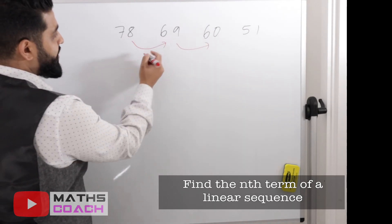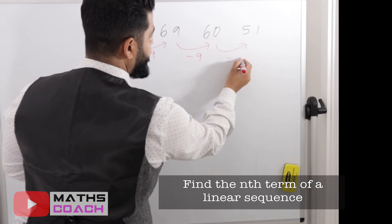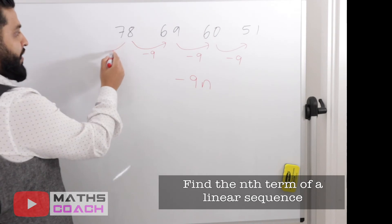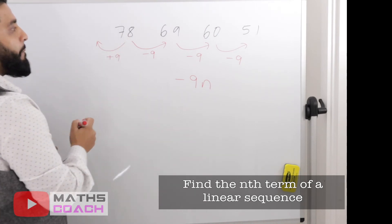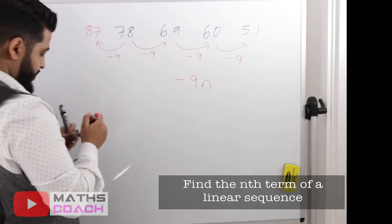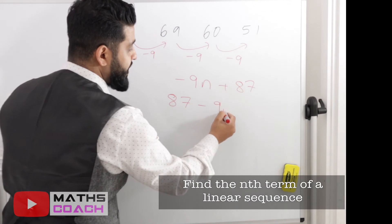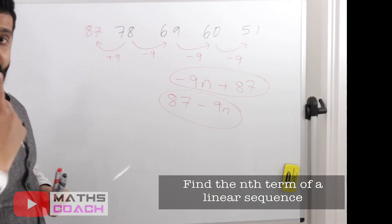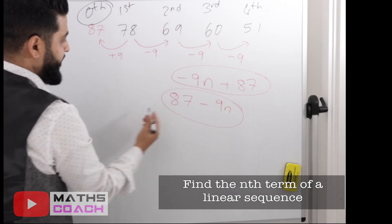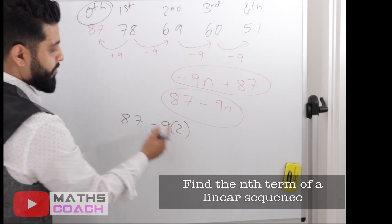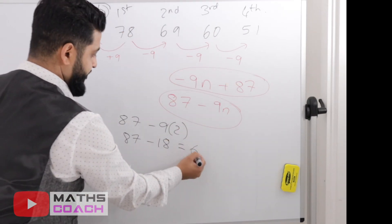In this example the sequence decreases: 78, 69, 60, 51 — each term goes down by 9. We write minus 9n. Going back from the first term, instead of subtracting 9 we add 9: 78 plus 9 is 87. So the rule can be written as 87 minus 9n. Let's test it on the second term: 9 times 2 is 18, and 87 take away 18 gives us 69. Correct.